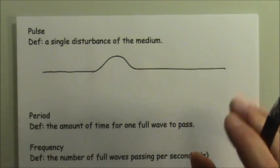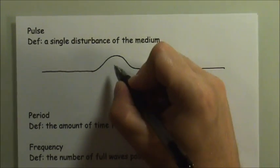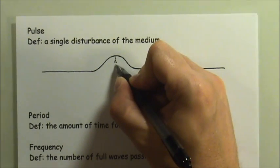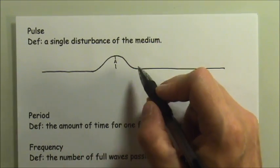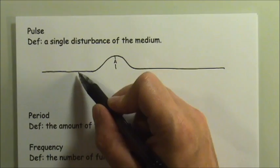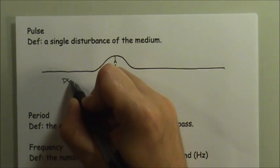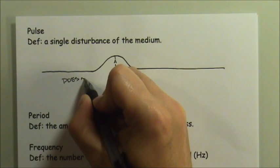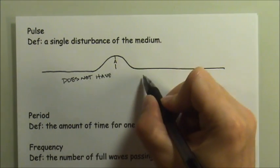A pulse has some of the properties that other waves have, but not all of them. One property it does have is amplitude - there is some maximum displacement above the normal equilibrium position. So it would be the distance from where the string would normally be to its maximum displacement.